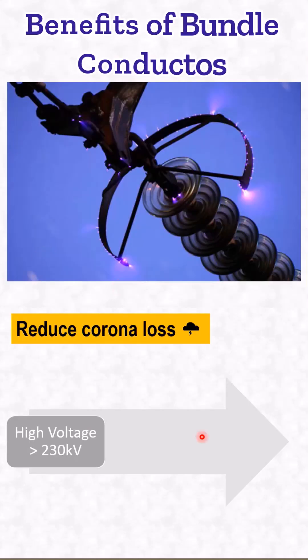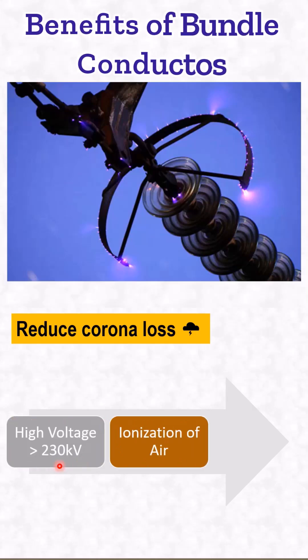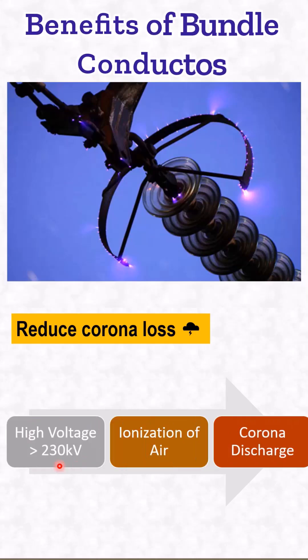At very high voltages above 200 kilovolts, the electric field around a single conductor is intense, causing the ionization of surrounding air, leading to corona discharge.